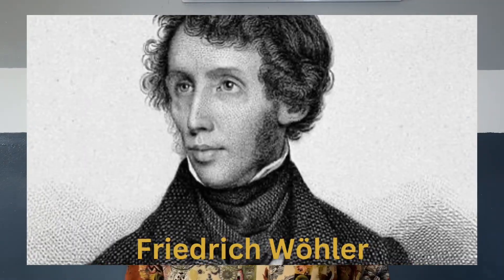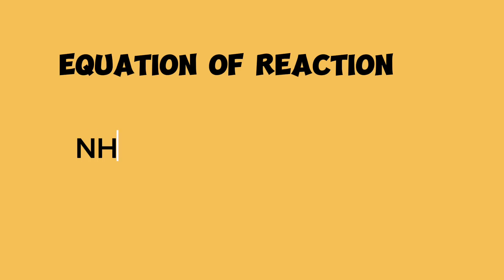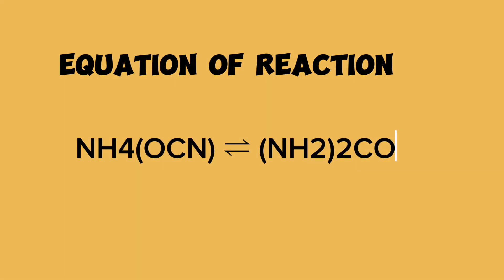Organic chemistry was previously defined as the study of compounds obtained from only living things, such as plants and animals. This meant that anything not from plants and animals was not considered an organic compound. Later, this definition underwent a radical change when a German scientist, Friedrich Wöhler, in 1828 synthesized urea — an organic compound — by heating ammonium thiocyanate, an inorganic compound.